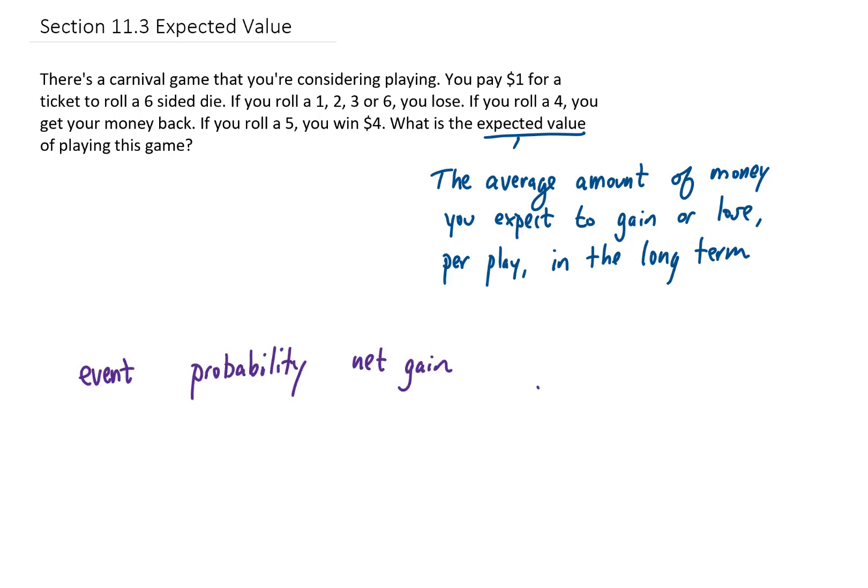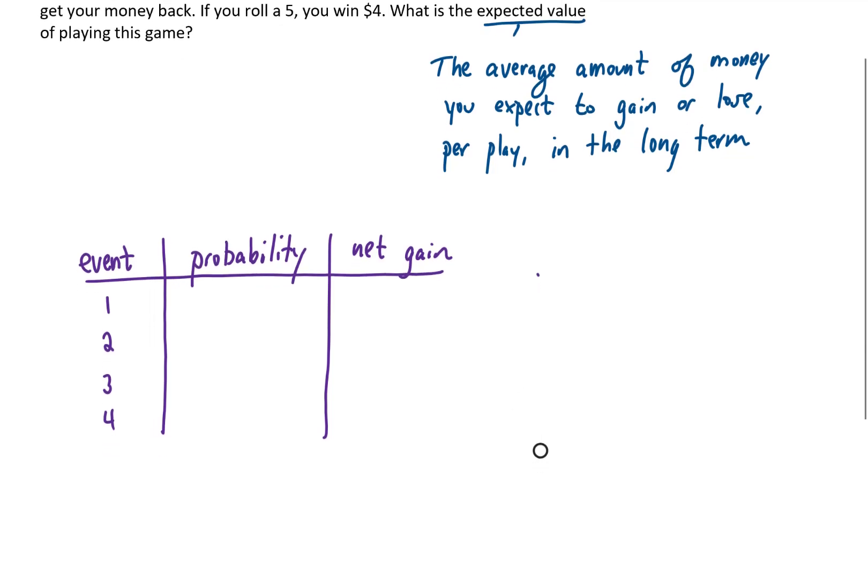To answer this question, it might be best to make a chart. In this chart, we're going to list the event that happens, the probability that that event happens, and the net gain from that event happening. So we're rolling a die, so the possibilities are rolling a 1, 2, 3, 4, 5, and 6.